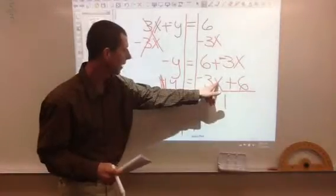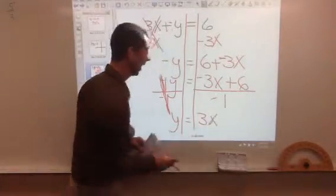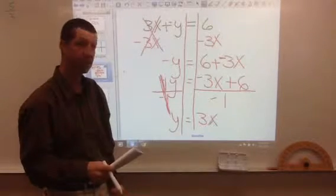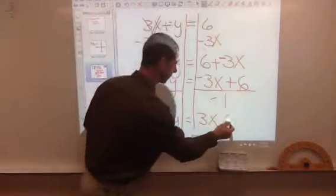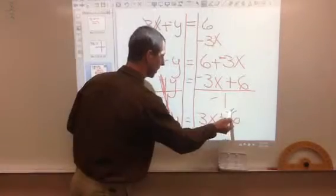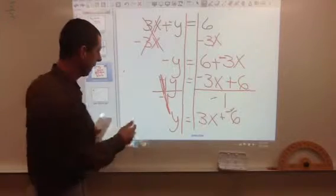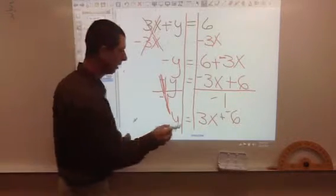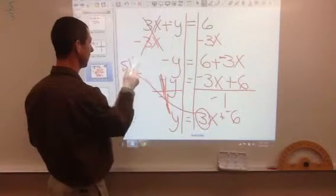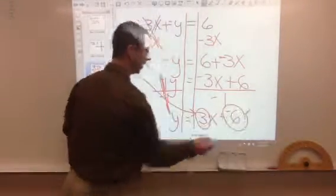Now, negative 3x divided by negative 1 is positive 3x. And a positive 6 divided by a negative 1 is a negative 6. So really, if we add the opposite here, this becomes plus negative 6 now. So now we have it in our y-intercept form that we needed it. And if we pick out what we need, here's the slope. So that right there would be the slope, is 3. And our y-intercept is negative 6.